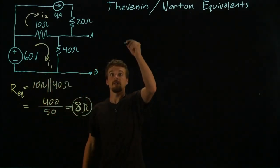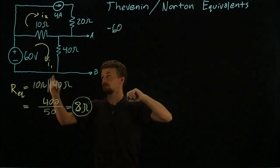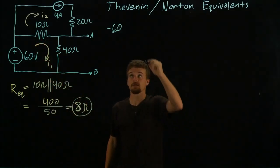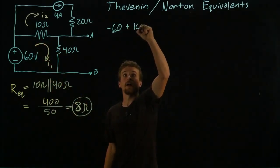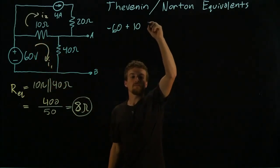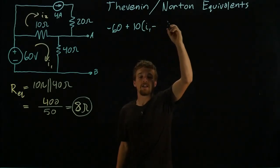So let's start here. We'll have minus 60 volts plus the voltage drop across this 10 ohm resistor, which is the value of the resistor times I_1 minus I_2. So that is I_1 minus 4.